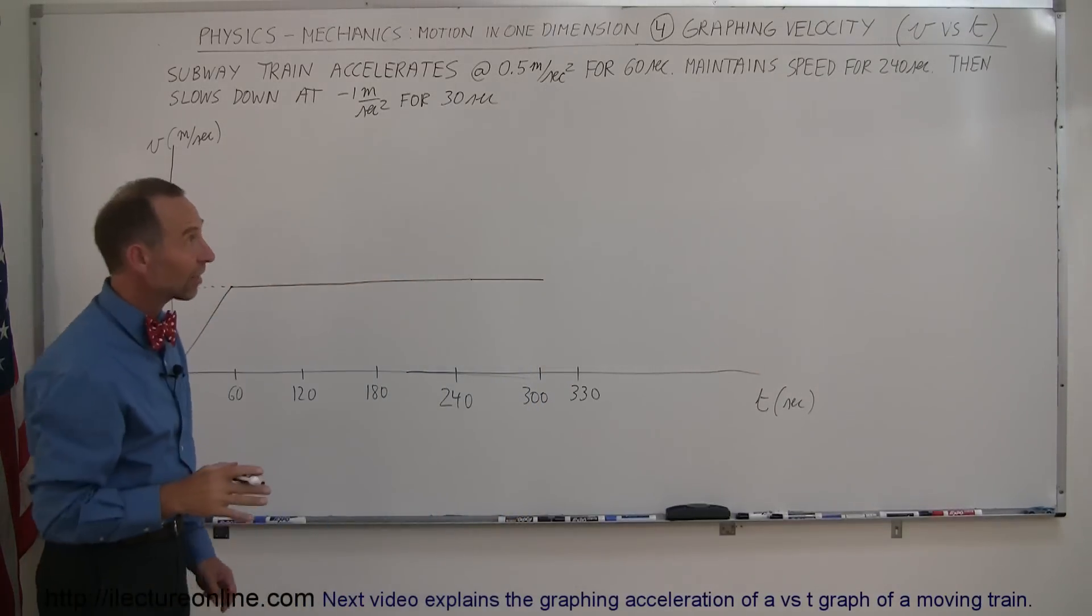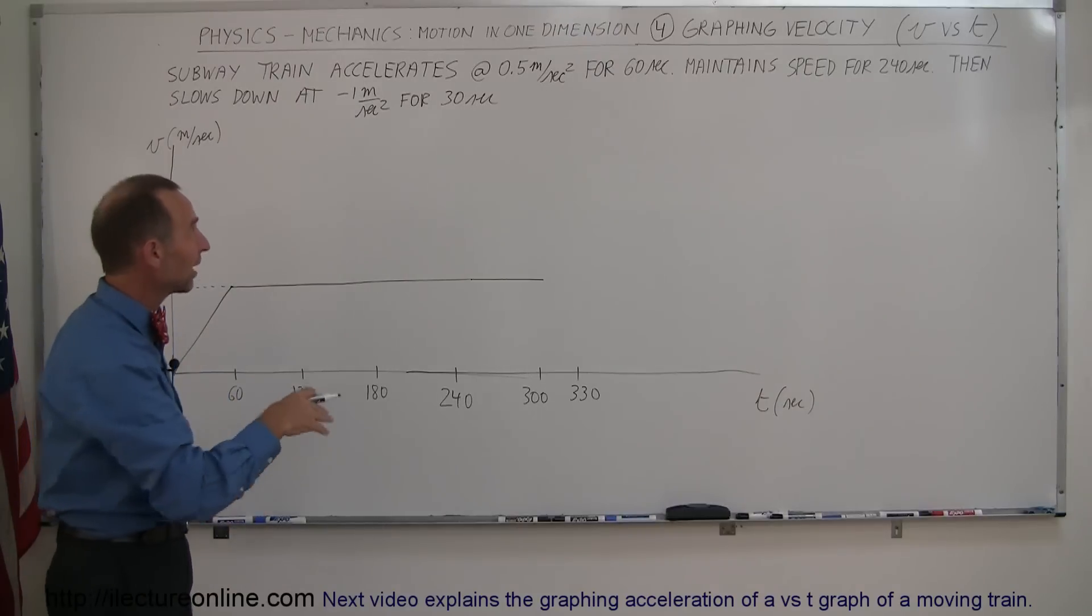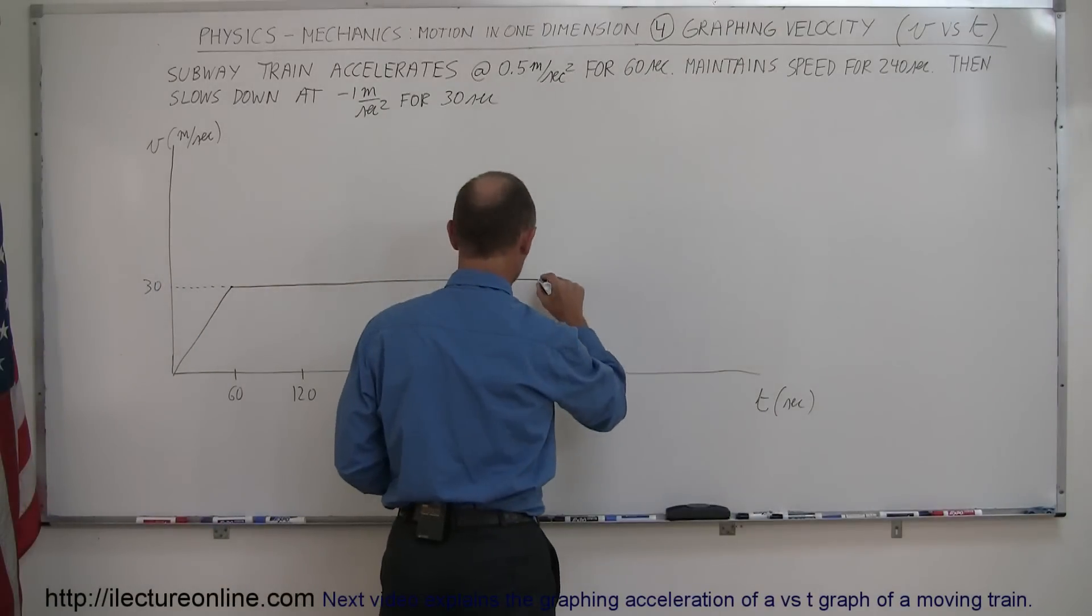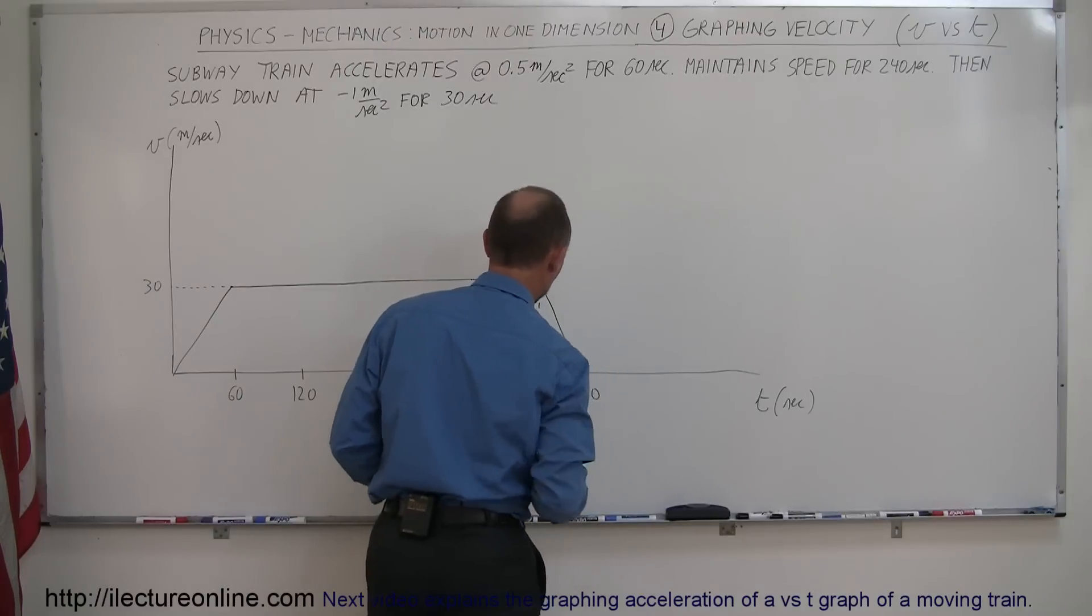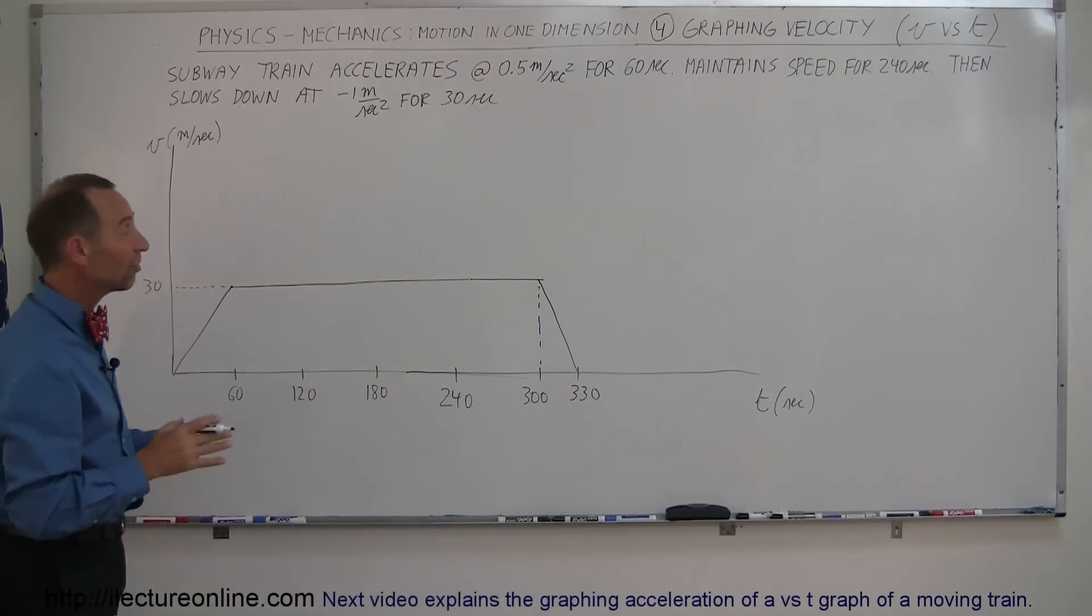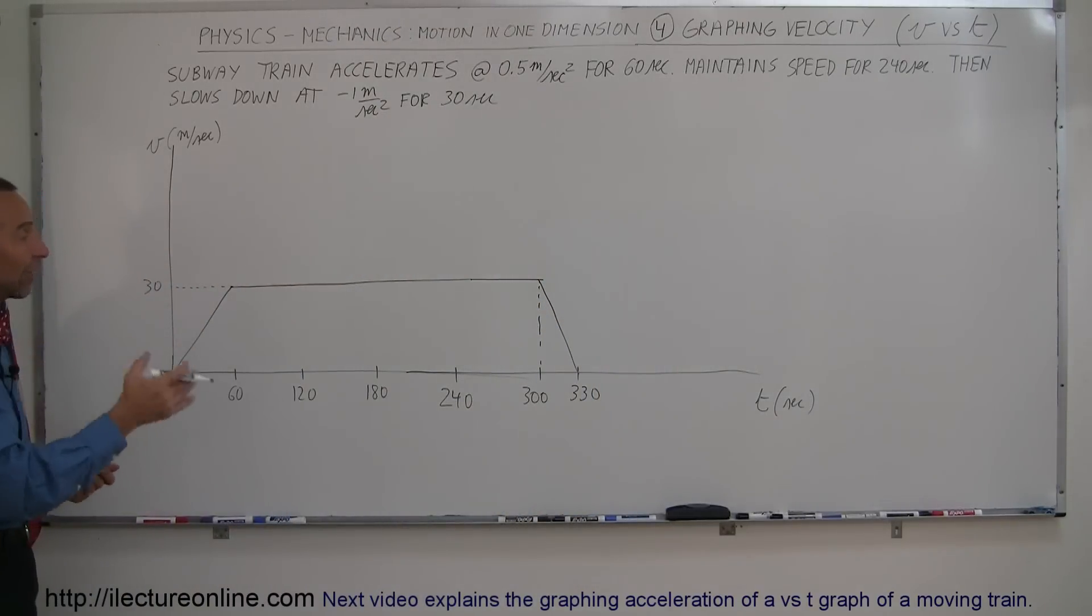And then for the last 30 seconds, it reaches the next station, it slows down at minus 1 meter per second squared for the next 30 seconds. So from this point right here, it slows down and comes down to there. And that's your velocity graph, or your velocity versus time graph of such a subway train. Now what does the slope represent of this graph?